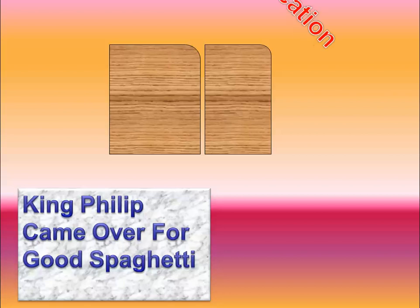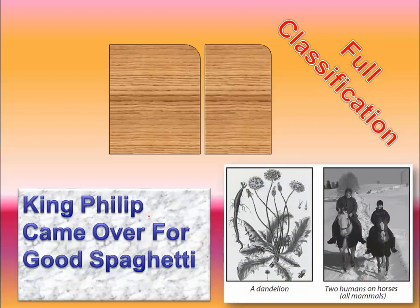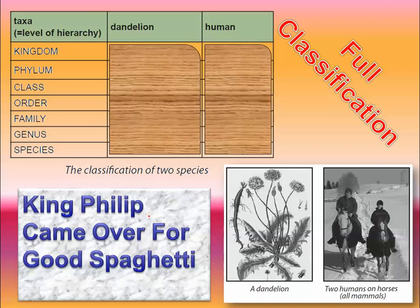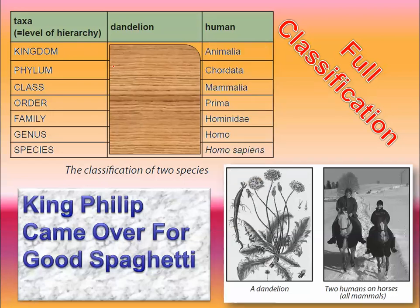King Philip came over for good spaghetti — that has always helped me. Here's a dandelion, and there are two humans on horses. King Philip came over for good spaghetti is to help you remember the different ways of classification — these are the different levels of hierarchy for these taxa. Taxonomy is what we're basically calling the study of classification. Humans are an animal, and animal is a type of kingdom. Chordata is a type of phylum. Mammalia is a type of class. So basically the full classification of a human — and here's the sad part — you need to know all of this.